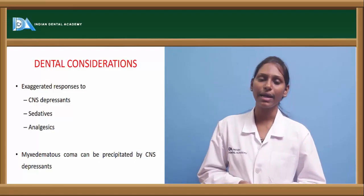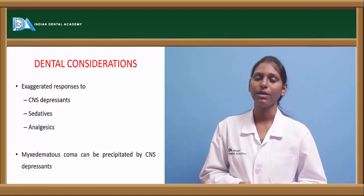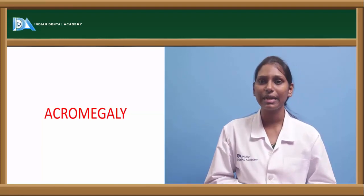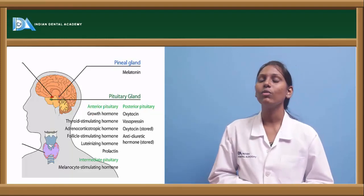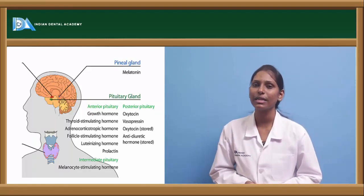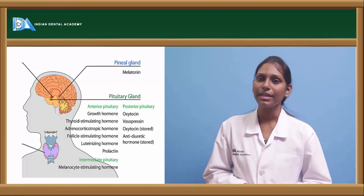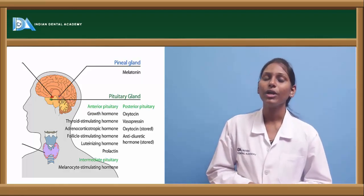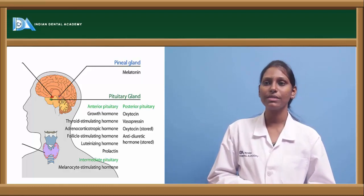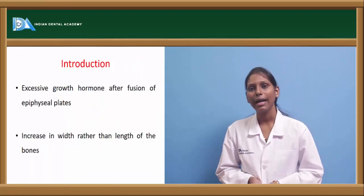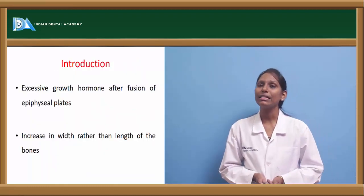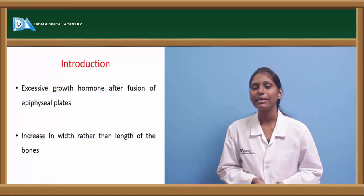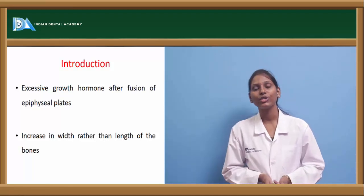Acromegaly is caused by excess growth hormone from the anterior pituitary gland in adults. When there is excessive growth hormone after fusion of the epiphyseal plates, it leads to acromegaly, where bones increase in width rather than length.